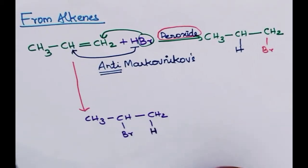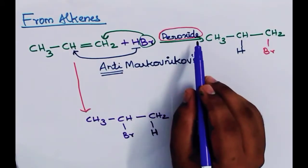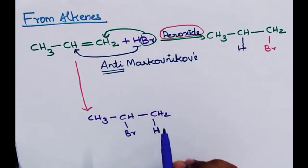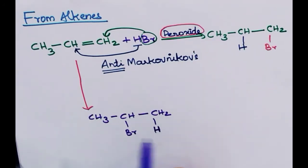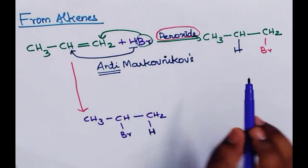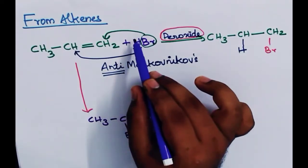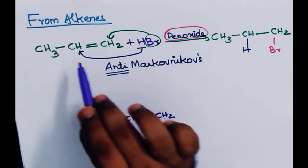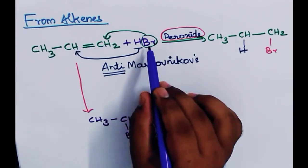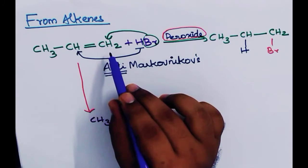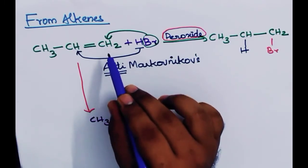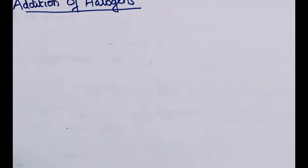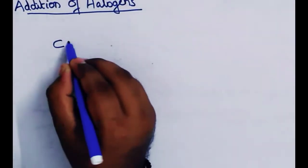We apply anti-Markovnikov's rule when using HBr in a peroxide medium. HBr has a positive charge on H and a negative charge on Br. HBr in peroxide medium causes anti-Markovnikov's rule to apply.